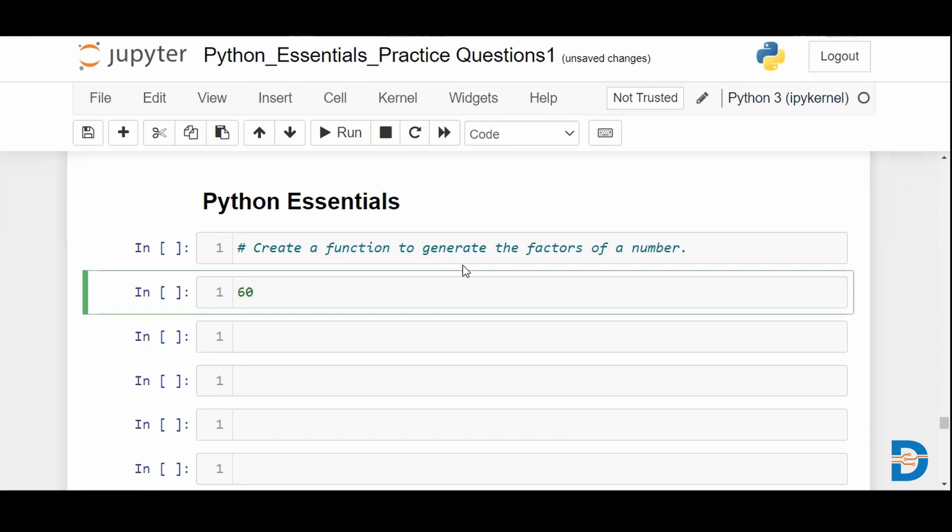The factors include one and 60 itself—the number in itself—and you have several other numbers which basically divide the number 60 perfectly, like 12 and 15. So let's try to define a function which will do that for any number that we input as an argument.